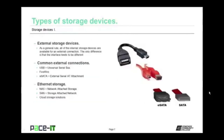Now let's talk about some external storage devices. As a general rule, all of the internal storage devices are available for an external connection — the only difference is that the interface tends to be different. Common external connections can be made through USB, FireWire (the IEEE 1394 standard), or eSATA (External Serial AT Attachment). Other types of external storage devices include network attached storage (NAS), storage attached network (SAN) — more likely found in enterprise environments than small home offices — and cloud storage solutions, which tend to be a type of storage attached network. All of these generally involve transferring data over Ethernet.